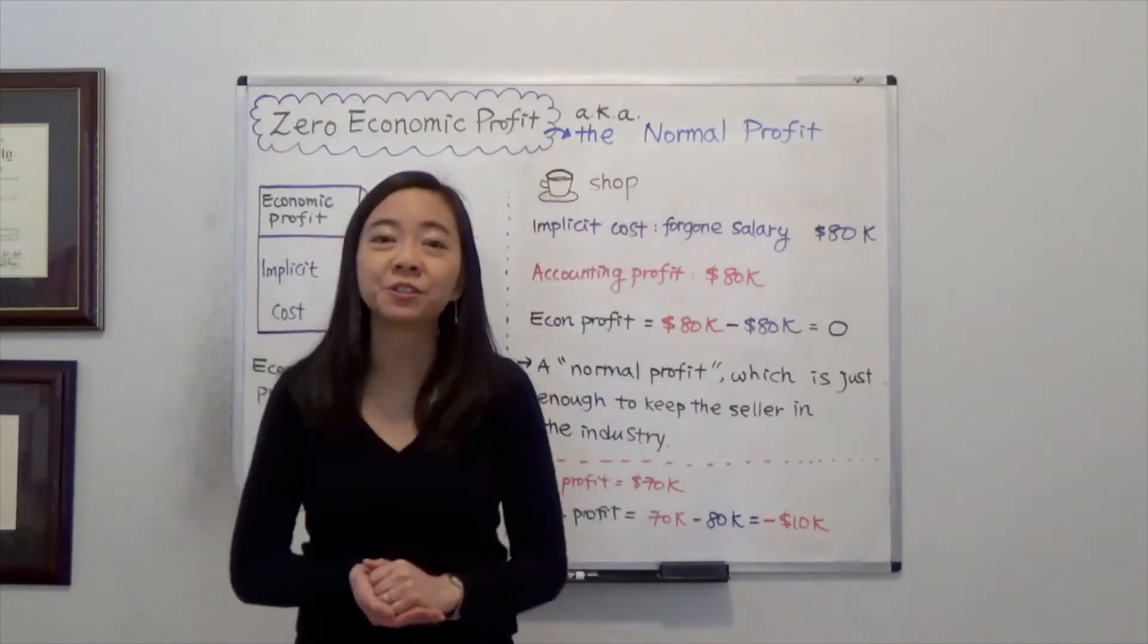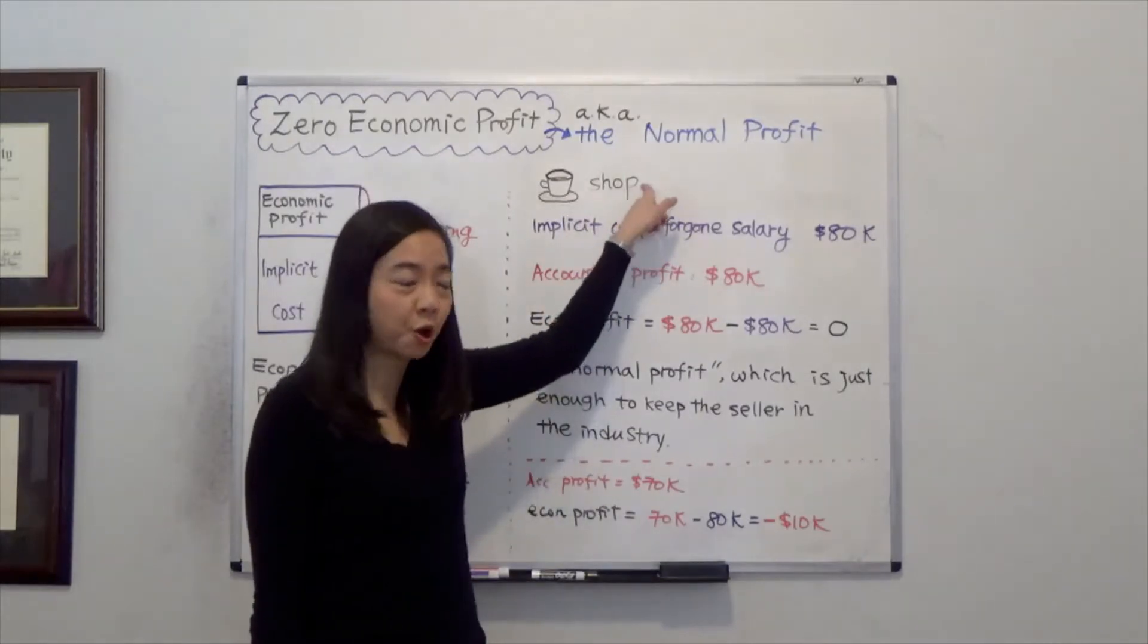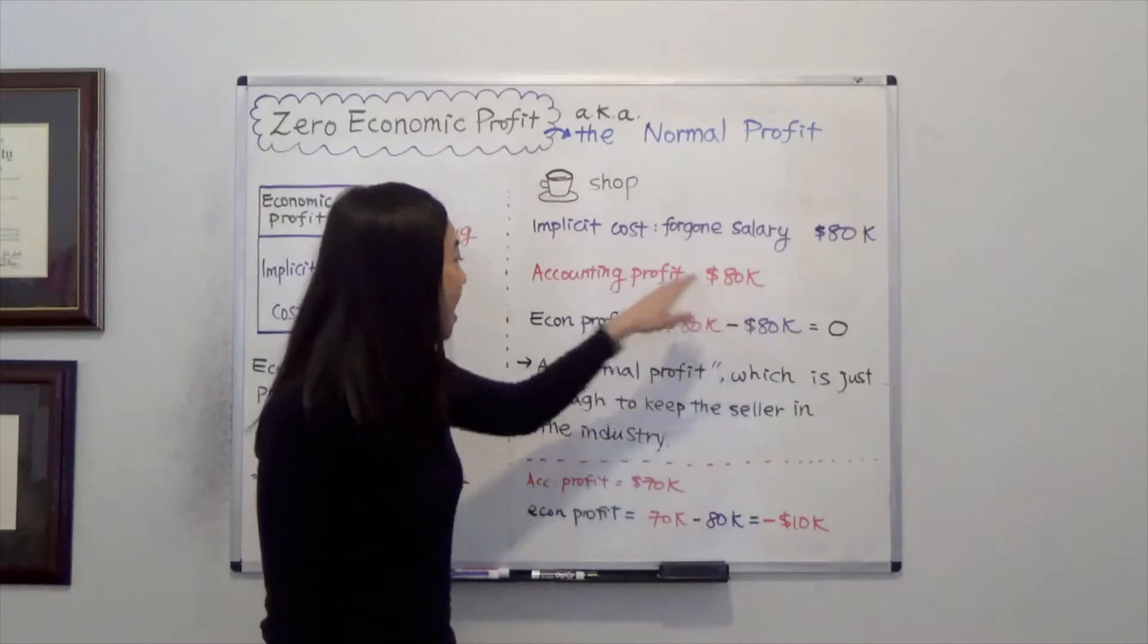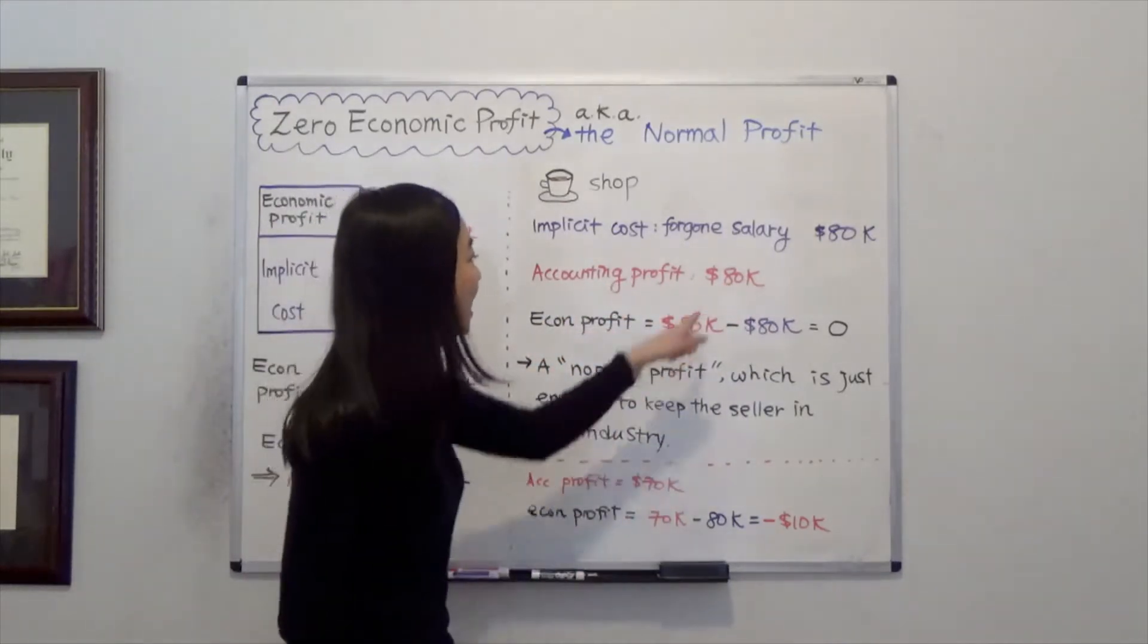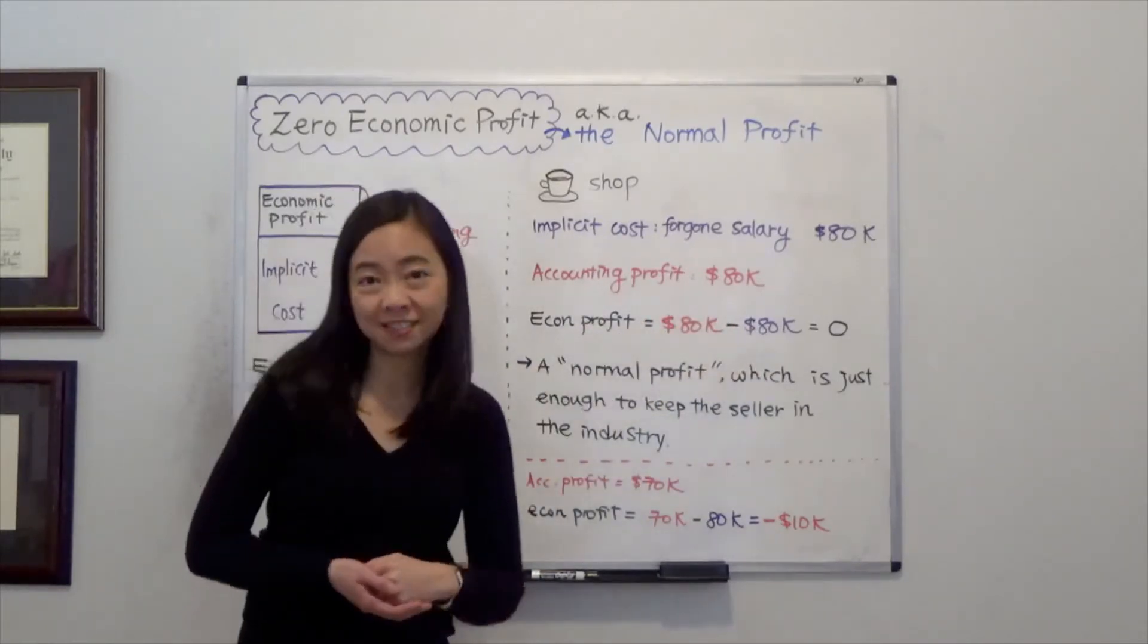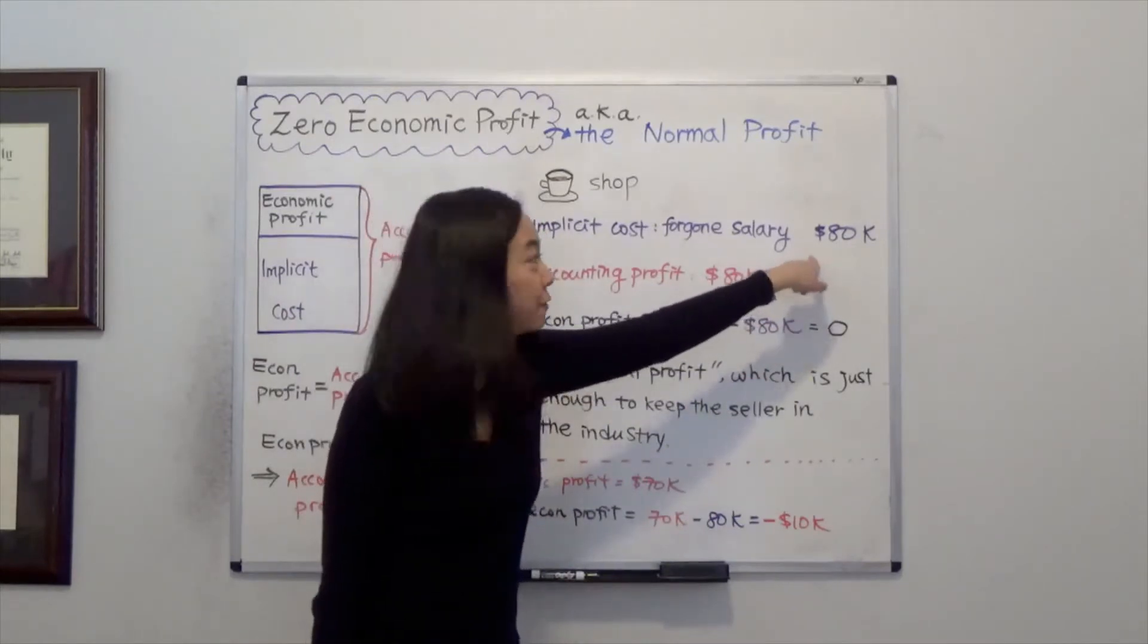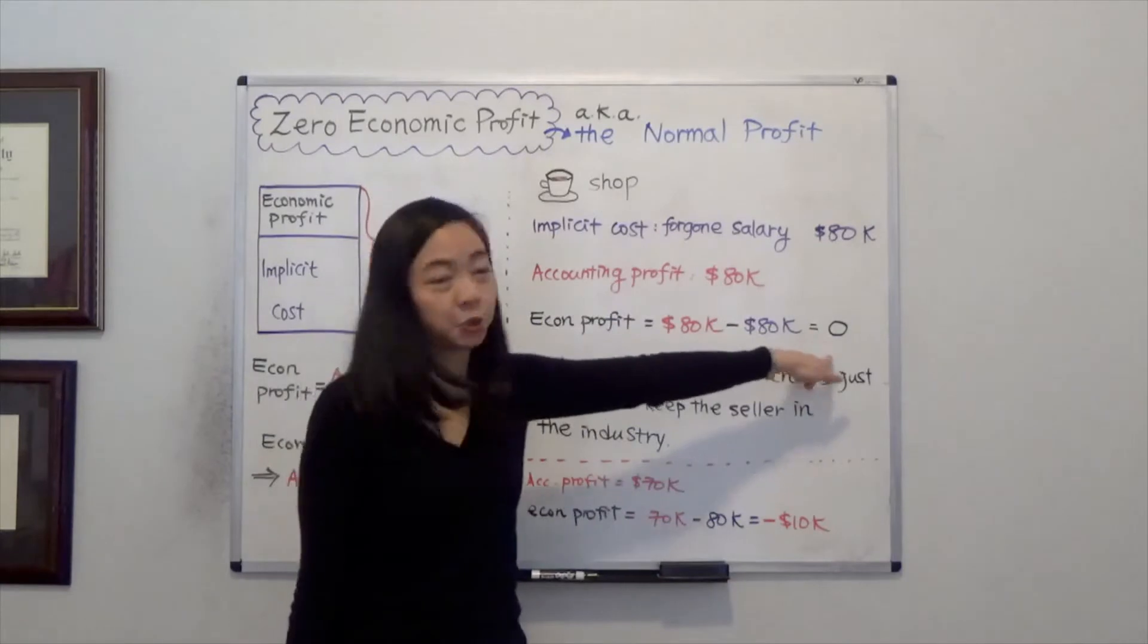Now suppose the first year, your accounting profit from your coffee shop is equal to eighty thousand dollars. Then your economic profit will be equal to your accounting profit, eighty thousand dollars, minus your foregone salary, your implicit cost, the eighty thousand dollars foregone salary as an engineer. Then you will have a zero economic profit.